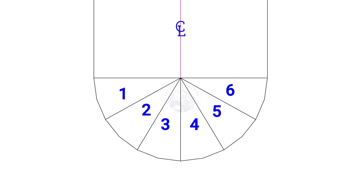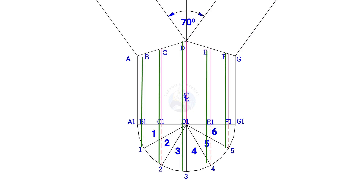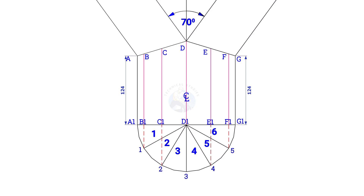Divide the half circle into 6 equal parts. Draw perpendicular lines from points 1, 2, 3, etc. Note down the measurements A, A1, B, B1, C, C1, etc.